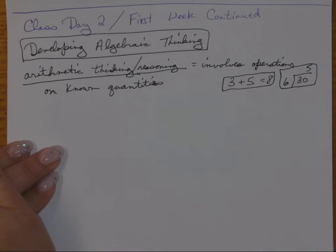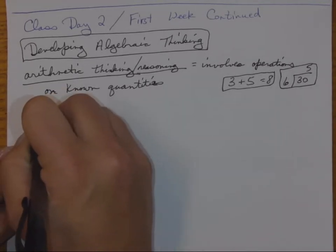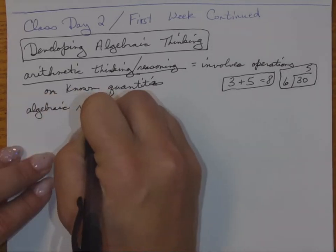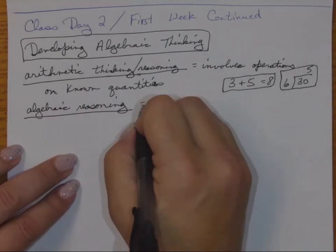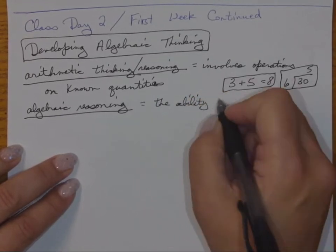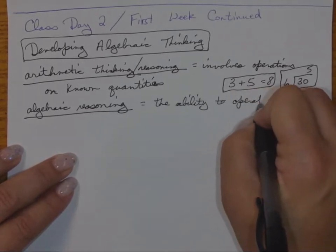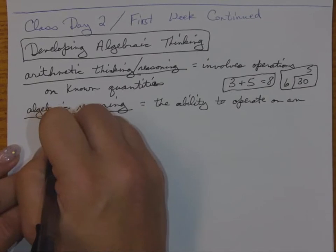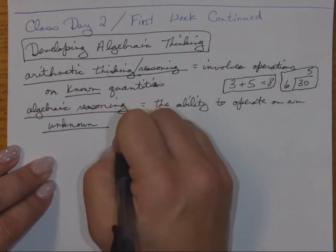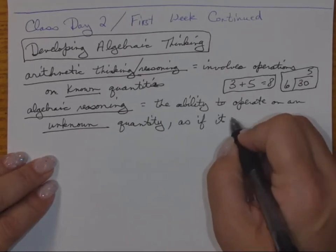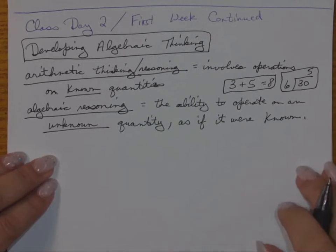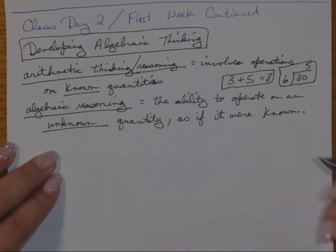In the lower grades we had to teach students to think arithmetically, but now we expect them to know those things — their multiplication tables, all their operations. We want to move them into algebraic reasoning. According to the book, algebraic reasoning is the ability to operate on an unknown quantity as if it were known.